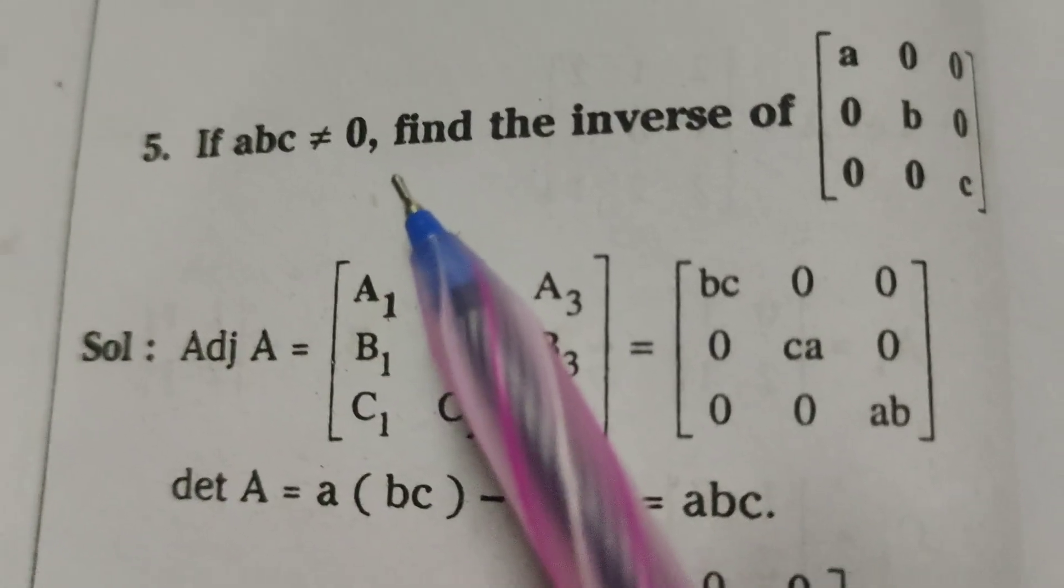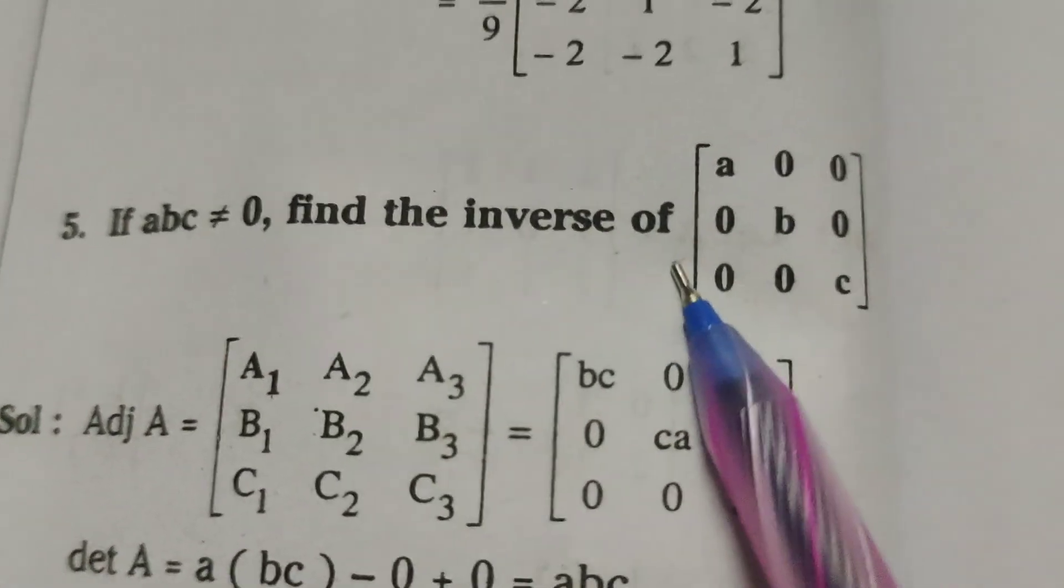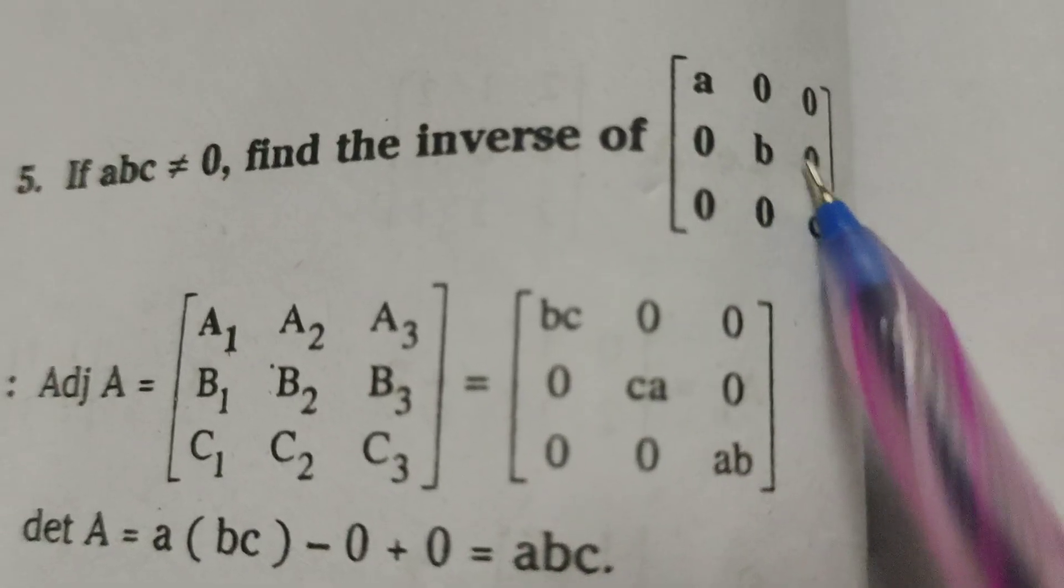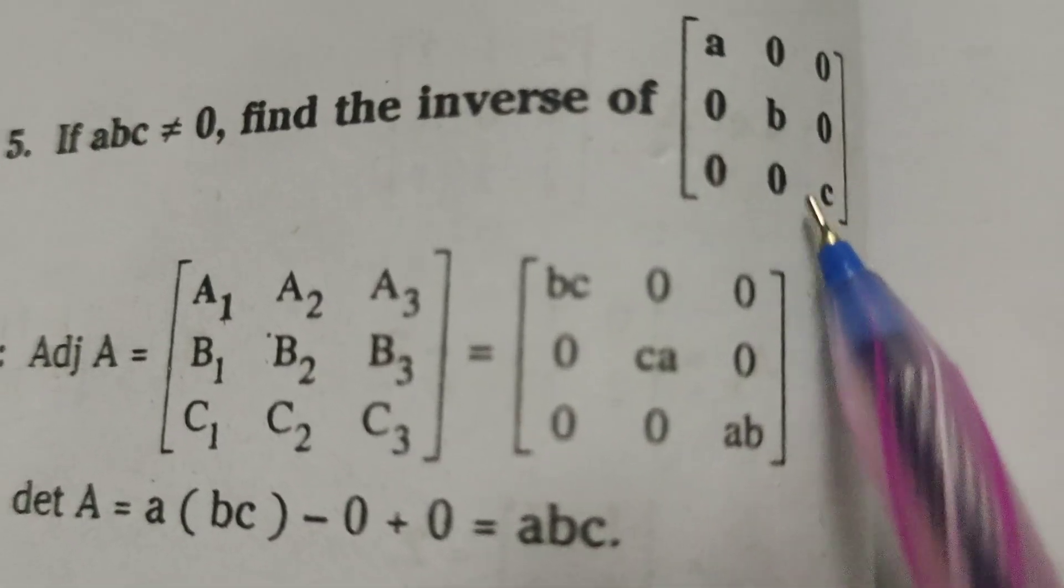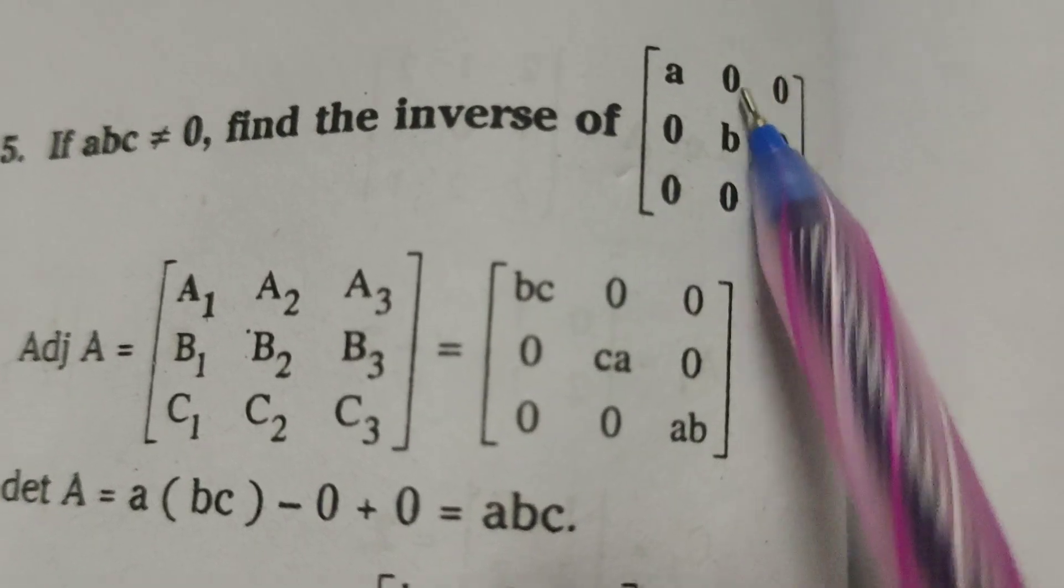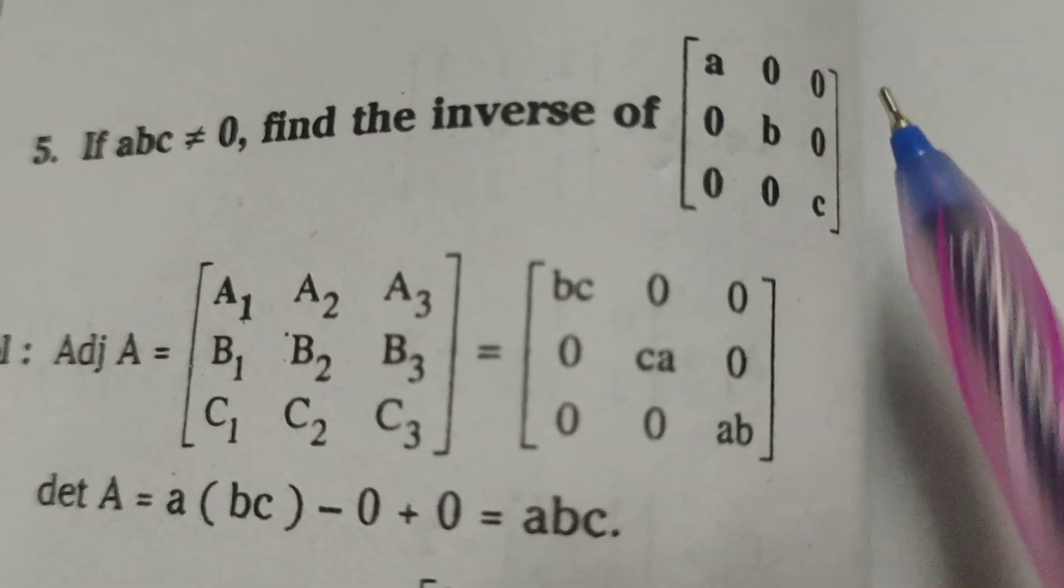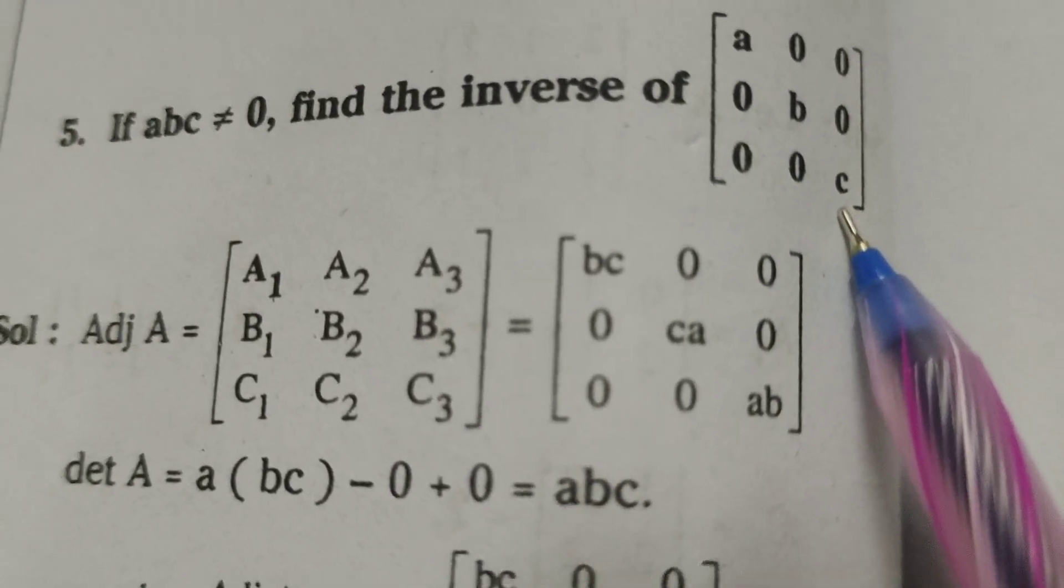If abc is not equal to 0, find the inverse of the matrix: a 0 0, 0 b 0, 0 0 c. Today we are going to explain how to find the inverse of this 3 by 3 matrix.